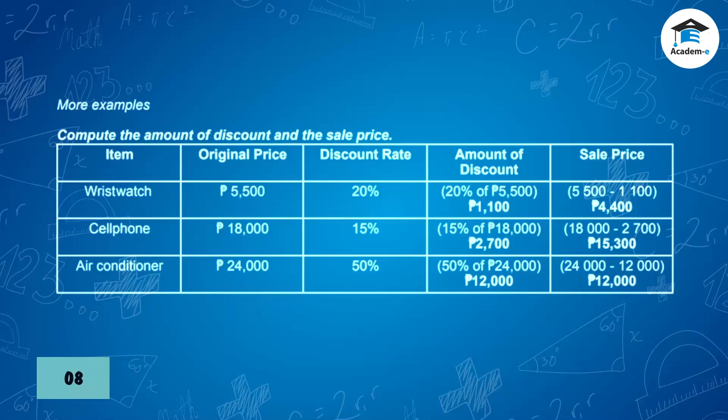Item: air conditioner, original price 24,000 pesos, discount rate 50%. Amount of discount: 50% of 24,000 pesos = 12,000 pesos. Sale price: 24,000 pesos minus 12,000 pesos = 12,000 pesos.